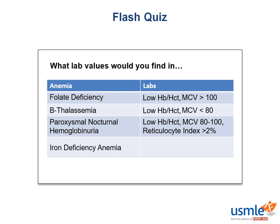And then lastly, for iron deficiency anemia — this is a bit of a trick question. We know it's going to have a low hemoglobin and low hematocrit, and the MCV is either going to be less than 80, in which case it's a microcytic anemia, or if it's very early in the anemia, then it'll be a normal MCV of 80 to 100 with a reticulocyte index less than 2%, which corresponds to a non-hemolytic normocytic anemia.